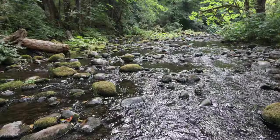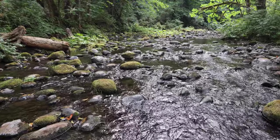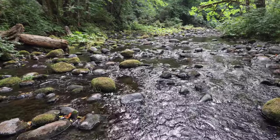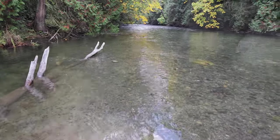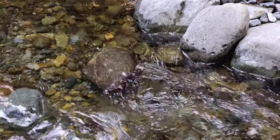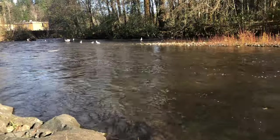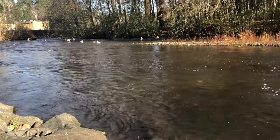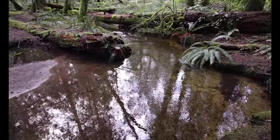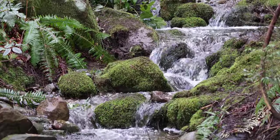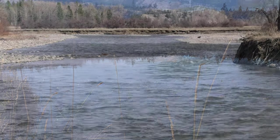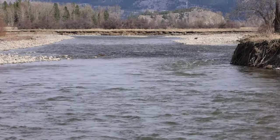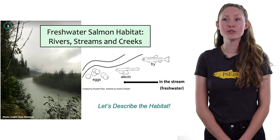Since salmon use stream habitats during the very start and the end of their lives, they have a lot of habitat requirements. Freshwater habitats include rivers, lakes, streams, and creeks. Water in rivers, streams, and creeks all flows downhill, moved by gravity, with rivers being the largest in size and creeks being the smallest. Think of this water as draining off of the landscape. We can think of lakes as pools of water connected by rivers, streams, and creeks.